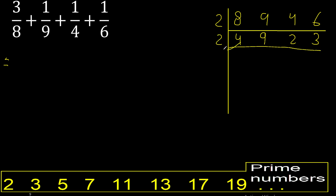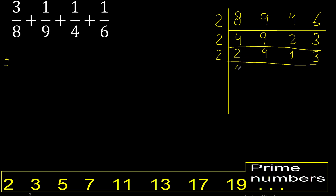Can be divided by 2, divided by 2. Cannot be divided by 2, okay. Can be divided, divided by 2 is 1.